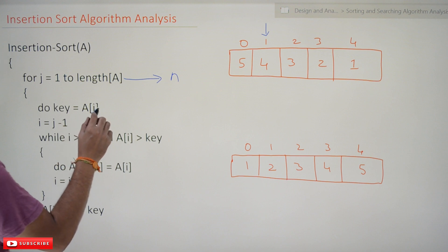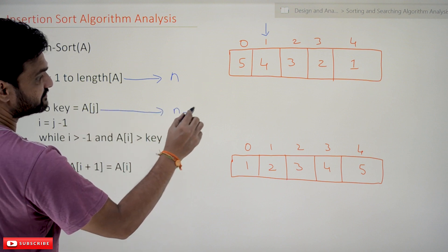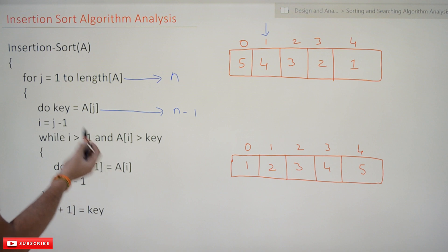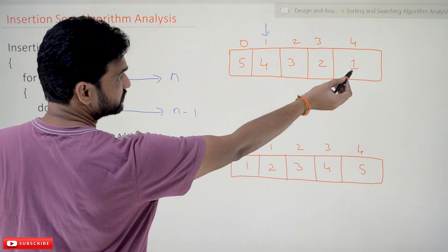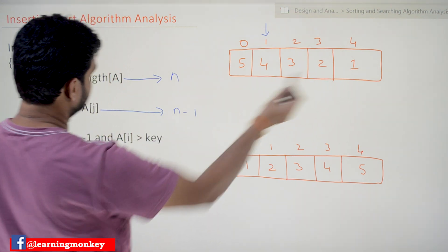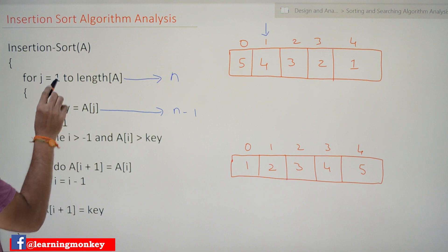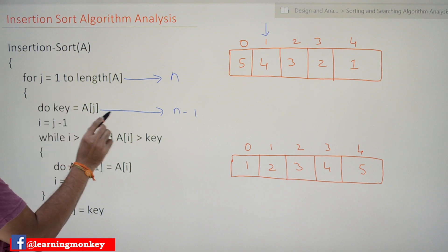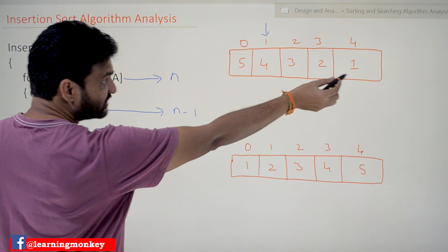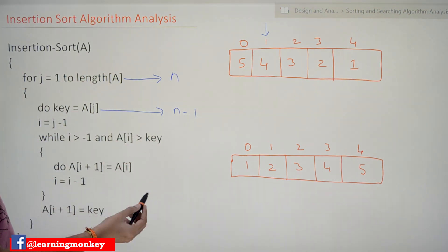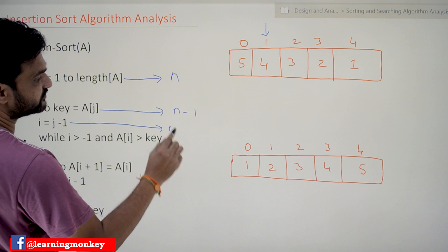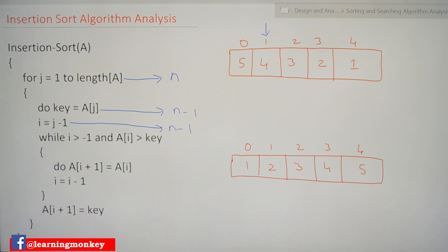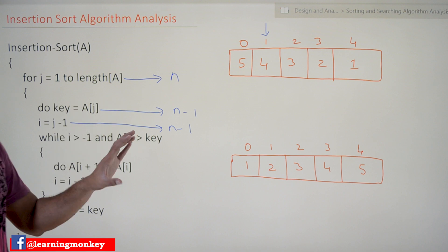The number of comparisons done by this for loop line is n. The next line — how many times does it execute? It is n minus 1. For example with 5 elements, this inner line executes only 4 times. Whenever we come into this loop, only then does this line of code execute. So it gets executed n minus 1 times. Similarly, this next line of code will also get executed n minus 1 times.